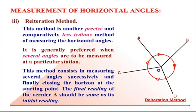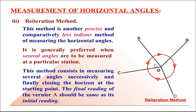The final reading of vernier A should be the same as its initial reading when the horizon is closed. Now, in this figure, O is the center point, and OA, OB, OC, and OD are the four lines. We have to measure the angles AOB, BOD, DOC, and COA.